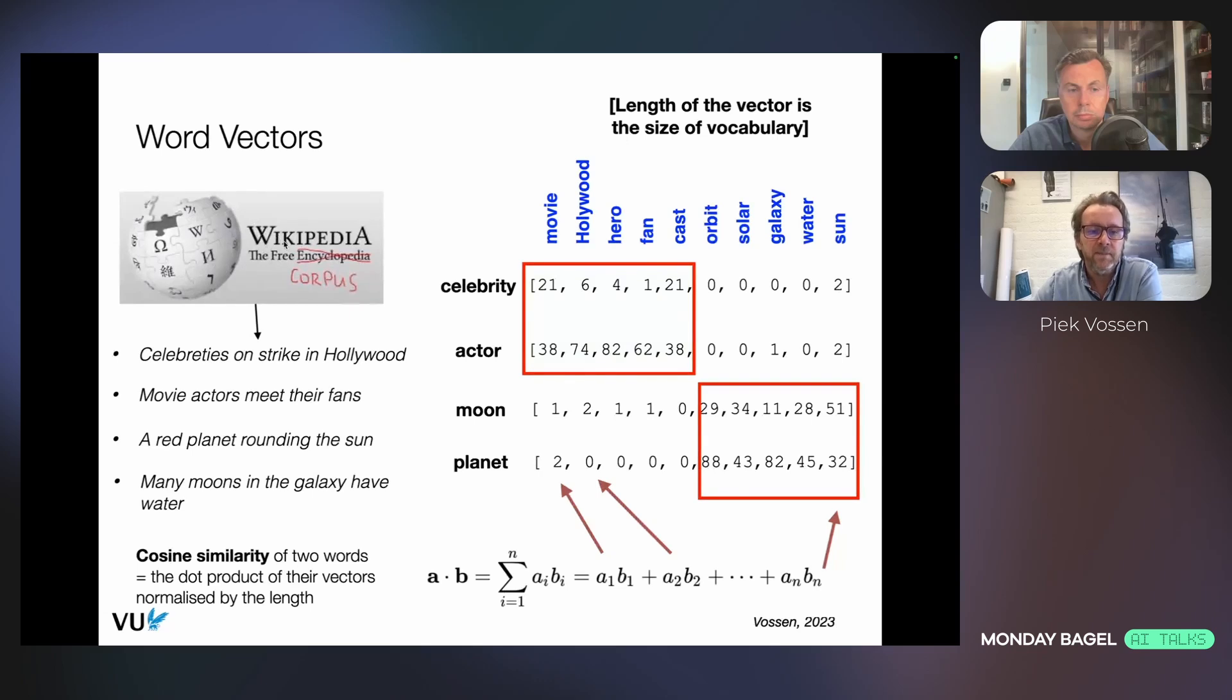We do this by looking at which words co-occur with it. We can take Wikipedia and get sentences from Wikipedia. Let's say that our target word to represent is celebrity, actor, moon, and planet. We're going to count in all these sentences from Wikipedia which words occur close by our target word. Movie occurred 21 times close to celebrity, Hollywood six times, and hero four, just simple programming and counting through all of Wikipedia.